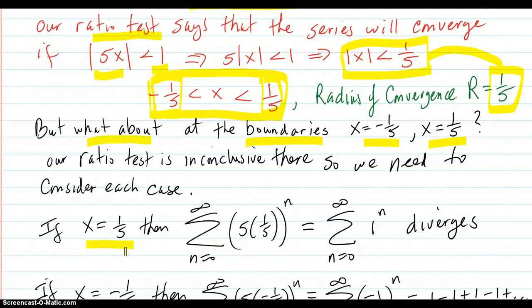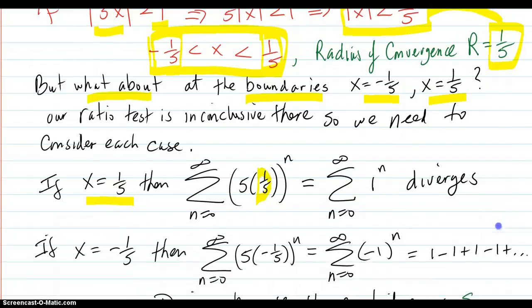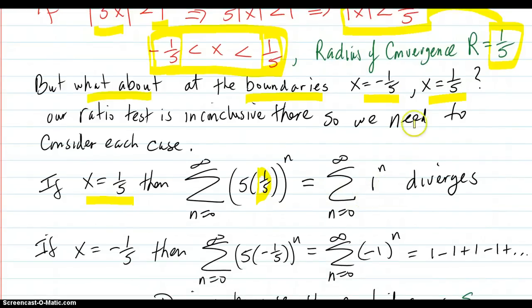If x equals 1/5, plug that in here, and you're going to get 1 to the n. And a sum of 1 to the n diverges. So this is out.